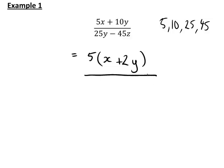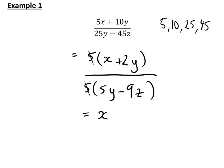Similarly on the denominator, taking 5 out as a common factor: 25y is 5 times 5y, and 45z is 5 times 9z, giving 5(5y − 9z). The 5s then cancel from both numerator and denominator, leaving us with (x + 2y) divided by (5y − 9z). That is a simpler form of our original expression.